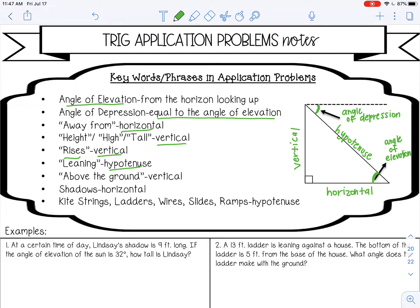If it says above the ground, like a cat is 10 feet above the ground, that would be vertical. Shadows are always horizontal on the ground. And then if you have things like kite strings or ladders or wires, a lot of times will be the hypotenuse.